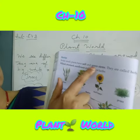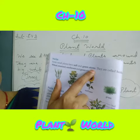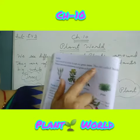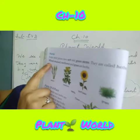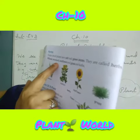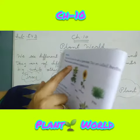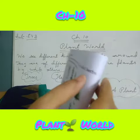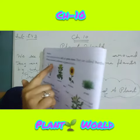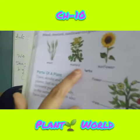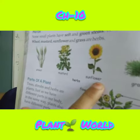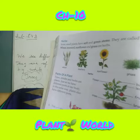Plants have soft and green stalks. They are called wheat, mustard, sunflower, grass — they are called herbs, and these are the examples. You see the pictures of wheat, mustard, sunflower, and grass. These all are herbs.